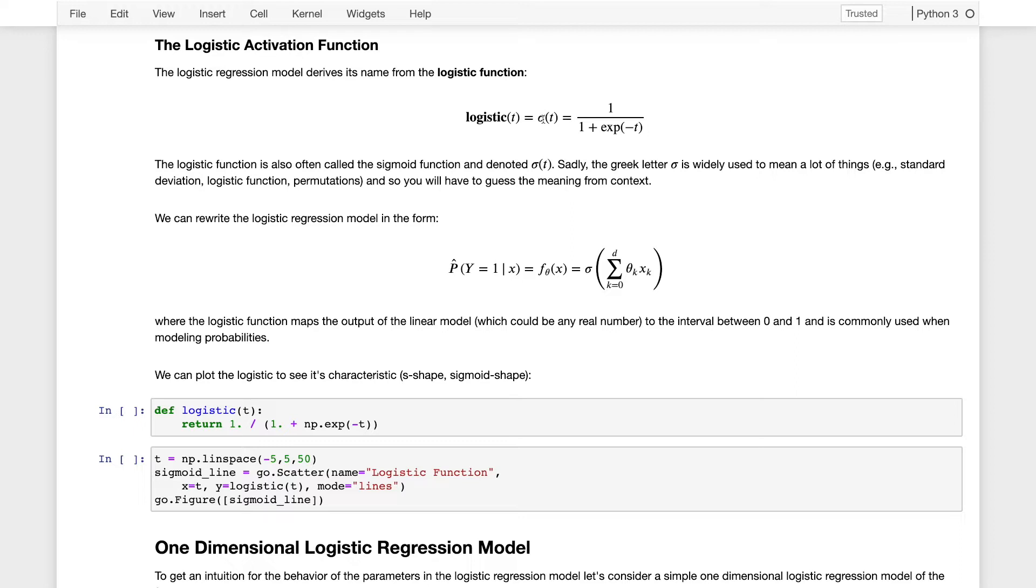It is also the natural Greek letter for something like standard deviation, and in weird cases also used for permutations. With this notation, we could then write the logistic regression model as the logistic function of a linear model. This again is where the term generalized linear model comes from.